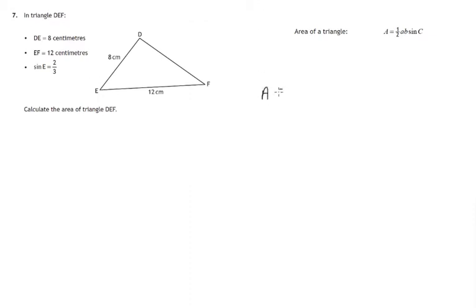Area is a half AB sine C. That's all very well if we're in a triangle with A, B and C, where the side opposite angle A is little a, and the side opposite angle B is little b, and there's angle C in between them. Which would mean that to find the area of that triangle, you're taking a half of this side times this side times the sine of the angle in between it.